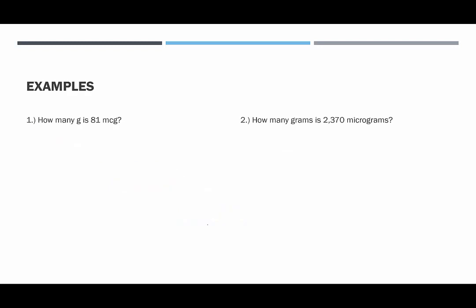Let's look at some examples. How many grams is 81 micrograms? So if we have 81 micrograms to convert it to grams, we would be dividing by one million. What's dividing by a million the same thing as? Moving the decimal point six places to the left, so starting behind the one where the decimal point would be, going one...